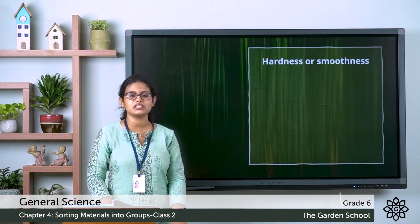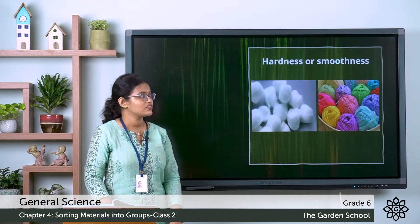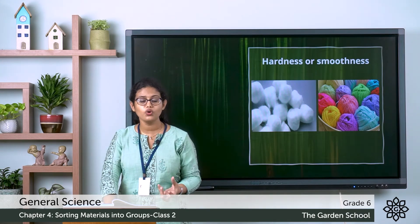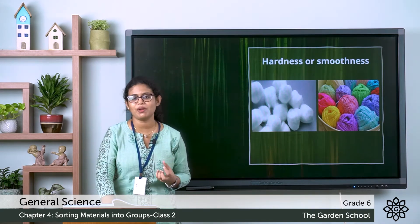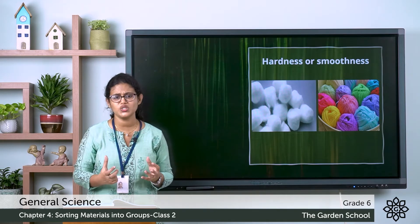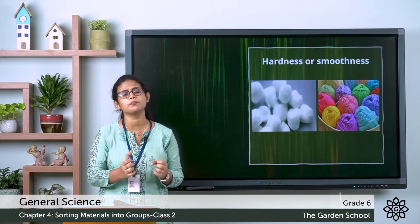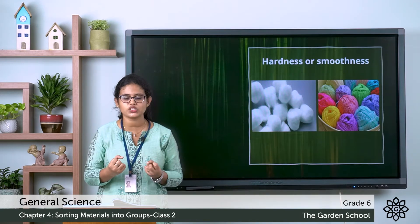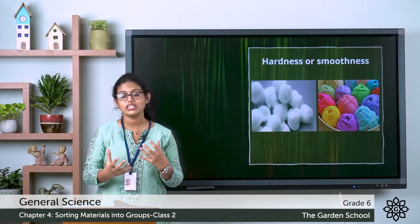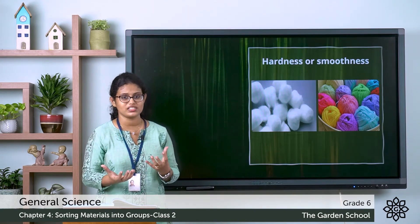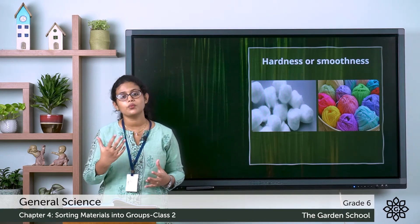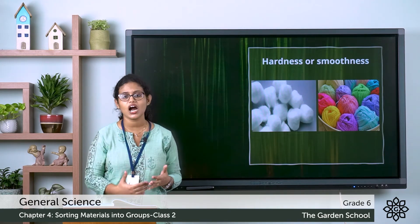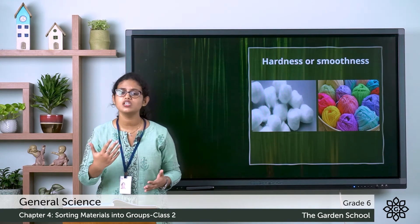While some other materials are very soft. For example, cotton balls, wool, paper — these materials are very soft. You can easily compress them, easily cut them, and easily scratch them. So that is the second property of materials, that is hardness or smoothness.